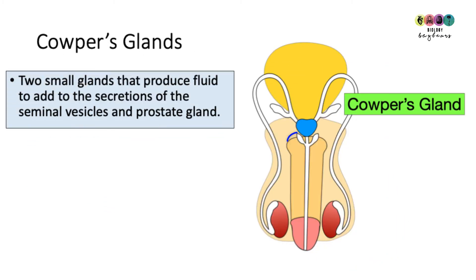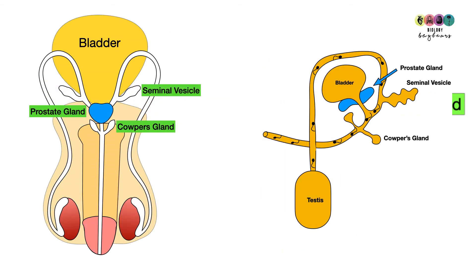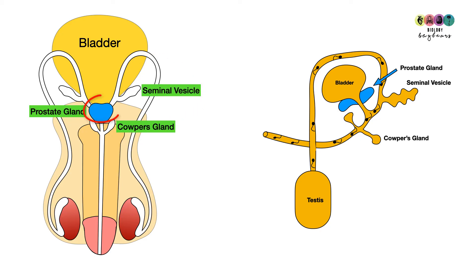Then we have Cowper's glands — two small glands that produce fluid added to the secretions of the seminal vesicles and the prostate gland. You should be able to recall all of the glands that produce seminal fluid: first the seminal vesicles, which produce most of it; then the prostate gland; and then Cowper's glands.